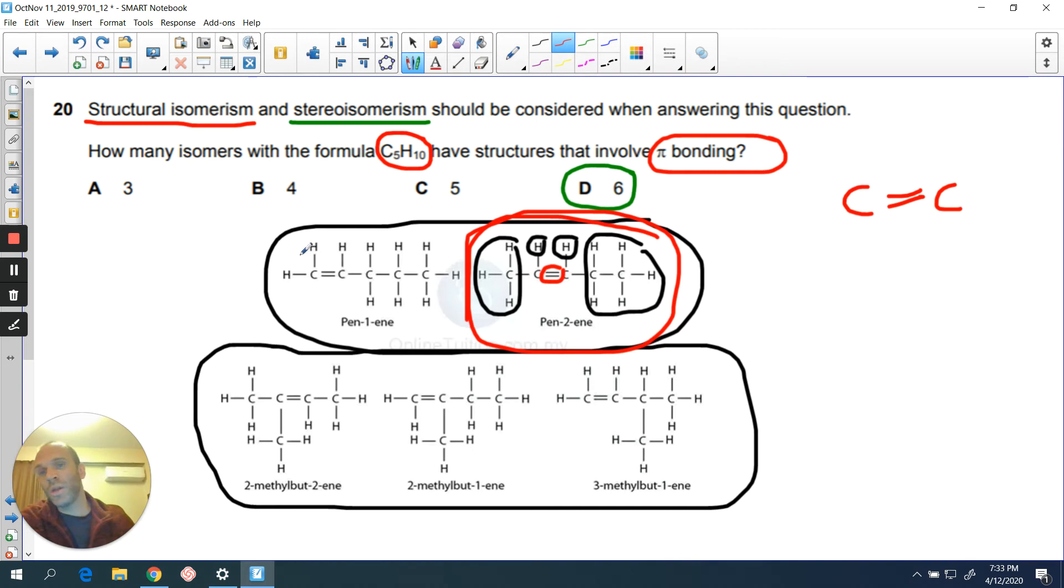Why is pent-1-ene not going to have one? Well, because on this carbon in the double bond, you've got two of the same thing. So it's not possible. In other words, you can't have your cis-trans.